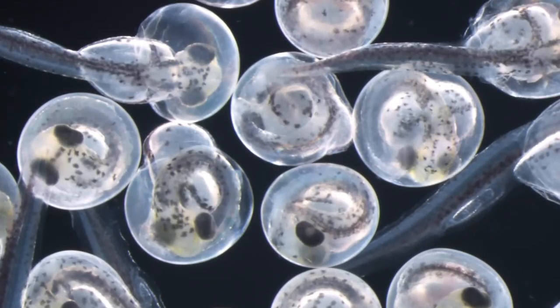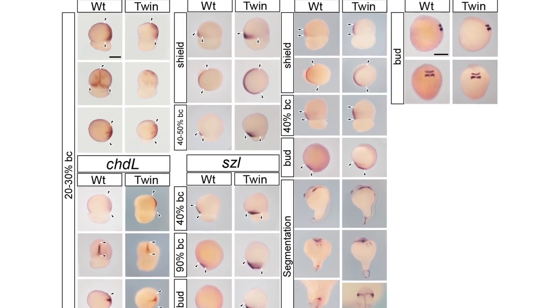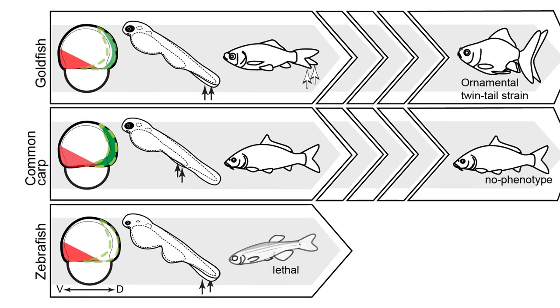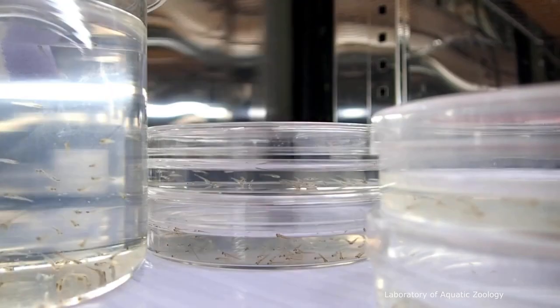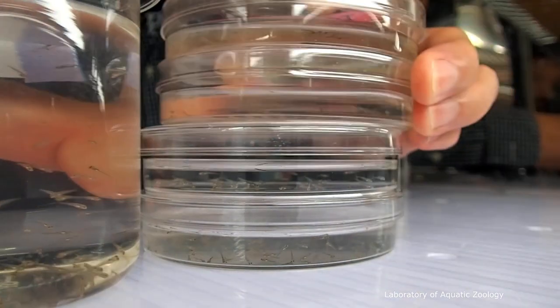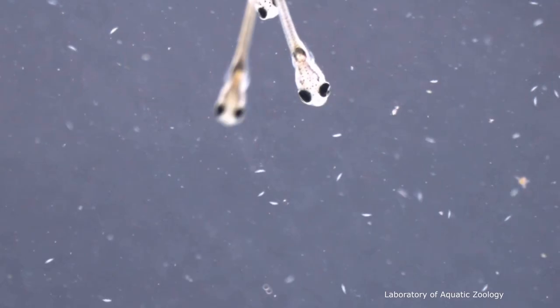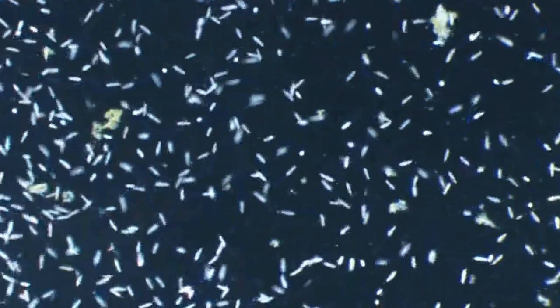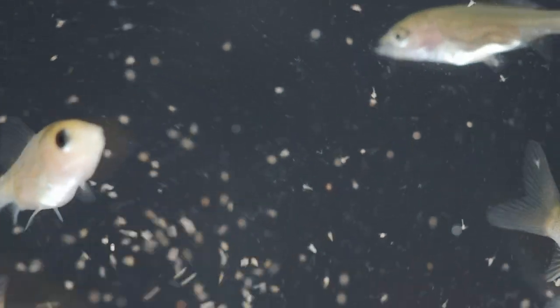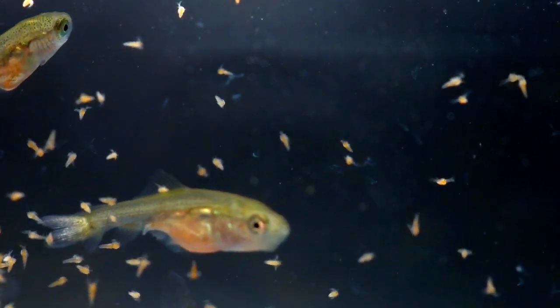This goldfish evolutionary developmental biology series will continue. We will explain in more detail the relationship between goldfish development and evolution. Next time, we will explain the management of food organisms for goldfish, such as paramecium and brine shrimps. I hope you learned something new about goldfish development and evolution from this episode. Please be sure to subscribe to our channel to catch the next episode. See you soon.